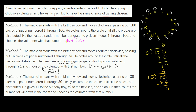Now let's think about method 3. The magician starts with the birthday boy and moves clockwise, passing out 30 pieces of paper numbered 1 through 30. They're all going to get the same number — 2 pieces each (15 children × 2 = 30 pieces). He cycles around until all pieces are distributed, giving number 1 to the birthday boy, number 2 to the next kid, and so on. He then counts the number of windows in the room and chooses the volunteer with that number.